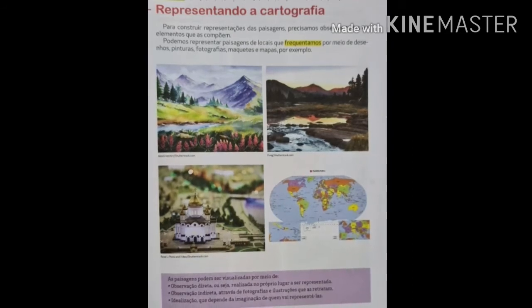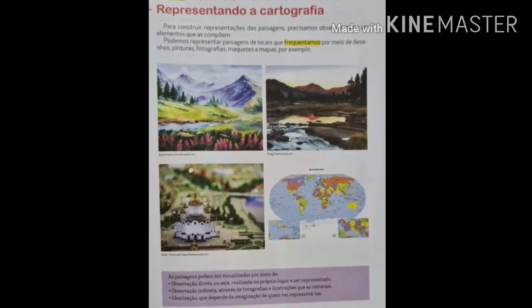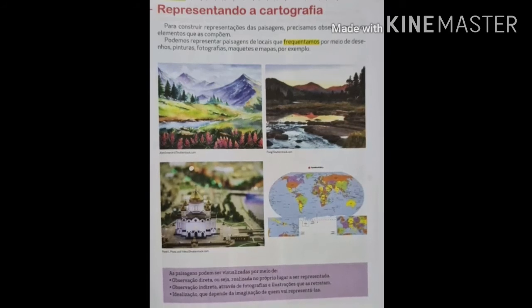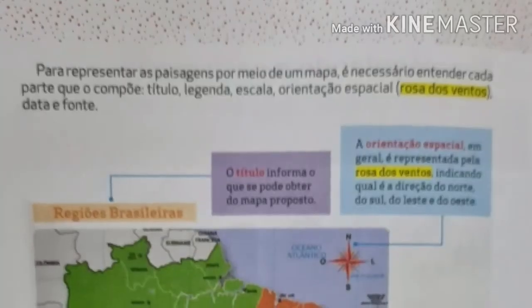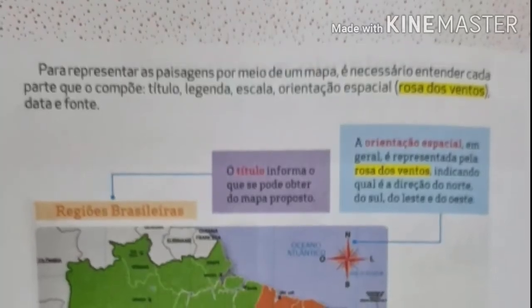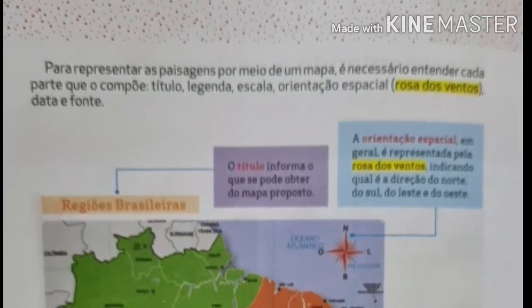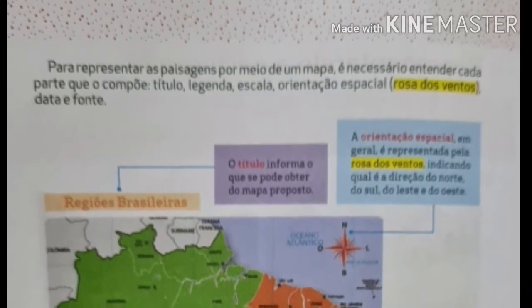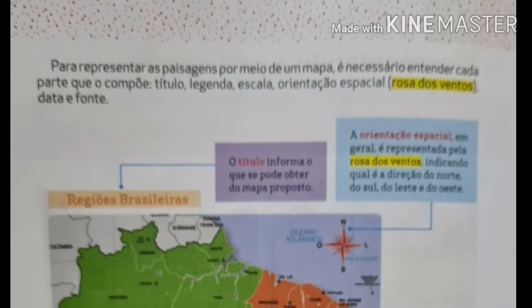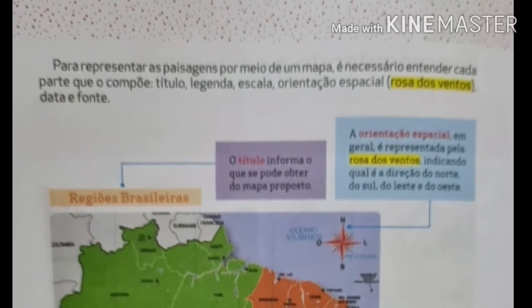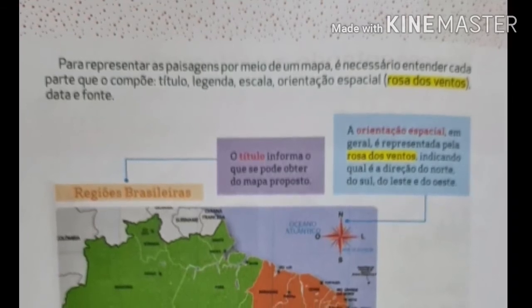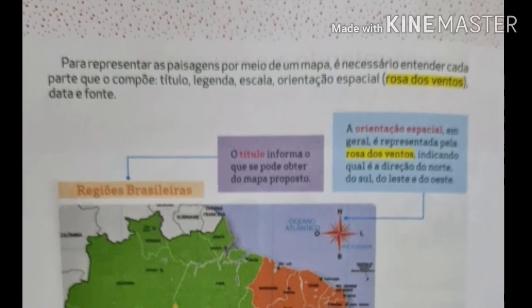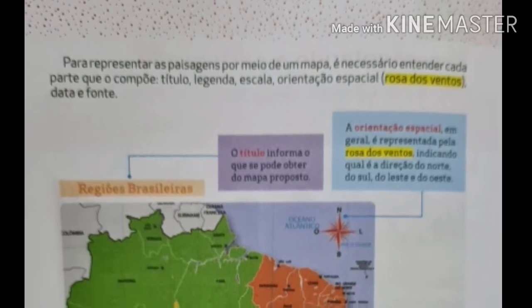Porque a cartografia nos ensina que são representações de lugares que frequentamos, que podemos mostrar através dessas paisagens. Lá na página 81, nós temos a representação de um mapa. Para representar as paisagens por meio de um mapa, é necessário entender cada parte que a compõe: título, legenda, escala, orientação especial, data e fonte.